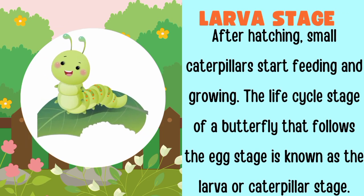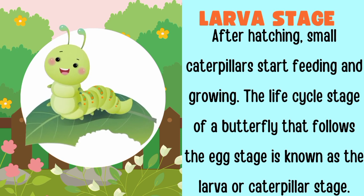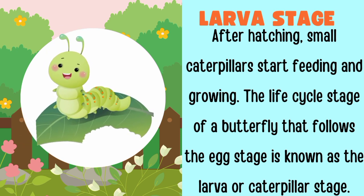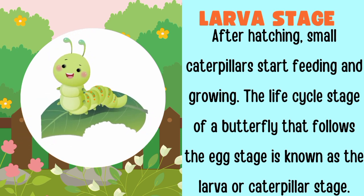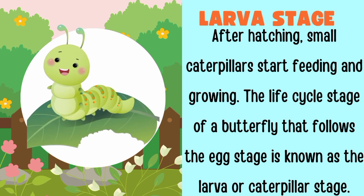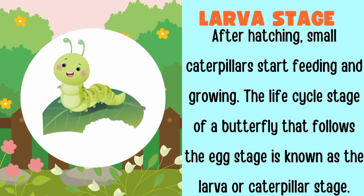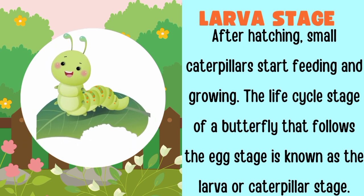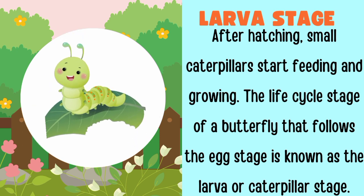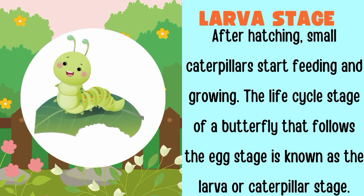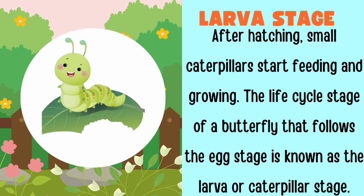The next stage is called the larva stage. After hatching, small caterpillars start feeding and growing. They eat leaves. It is called the larva or caterpillar stage.